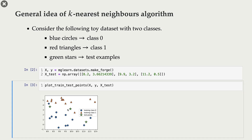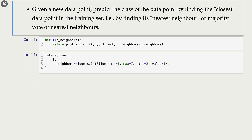We have these three test points. Remember that in supervised machine learning our goal is to predict the target of new unseen examples — so these are our new unseen examples, and the question is how do we predict their targets. Here is the general idea of the k-nearest neighbors classifier: given a new data point, we look at the data point in the training data that is most similar to this new data point, and we use its class as the class of the new data point.